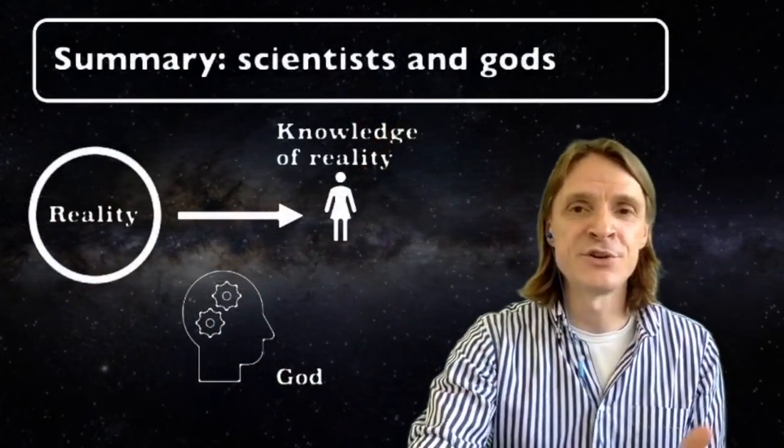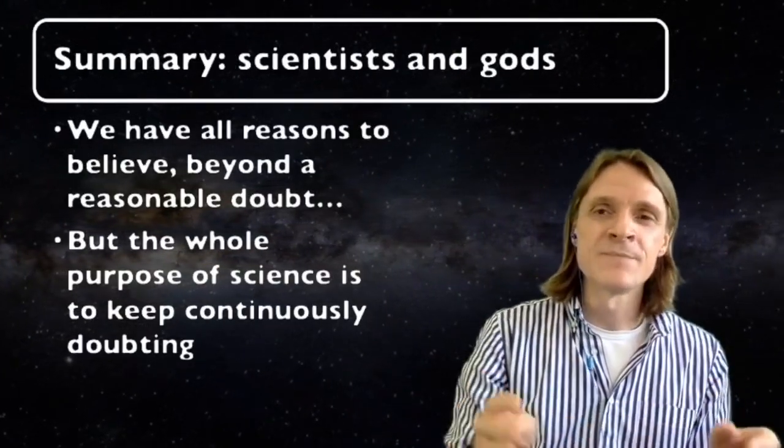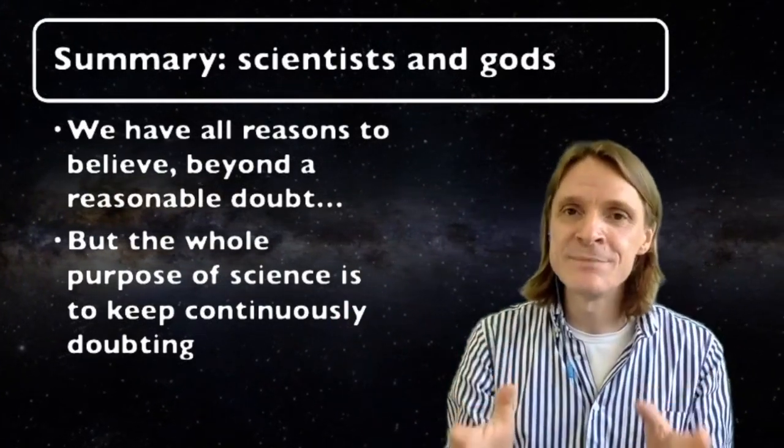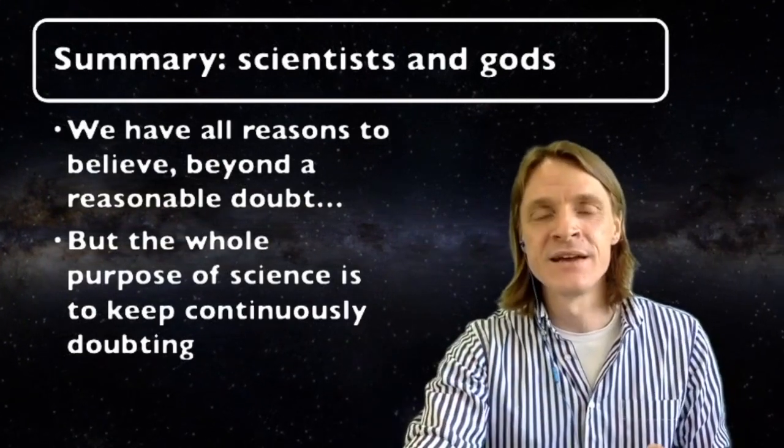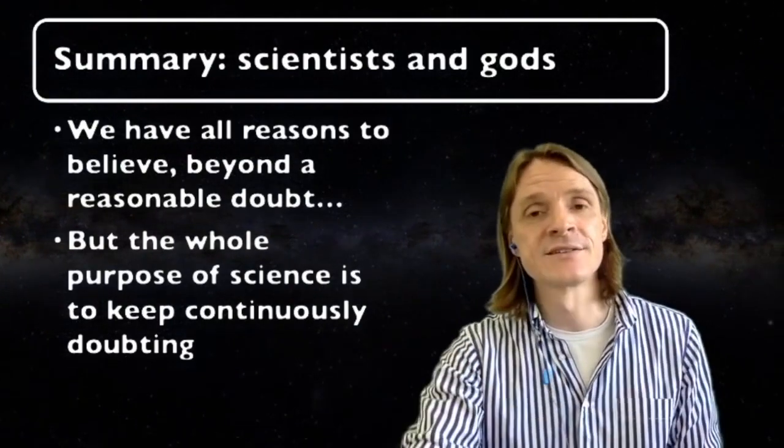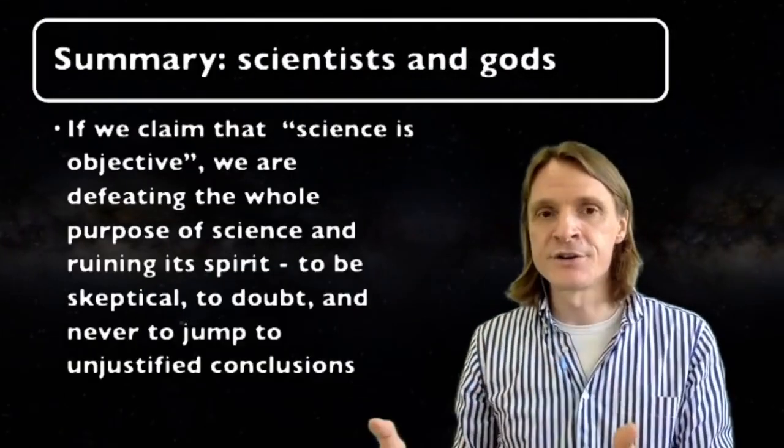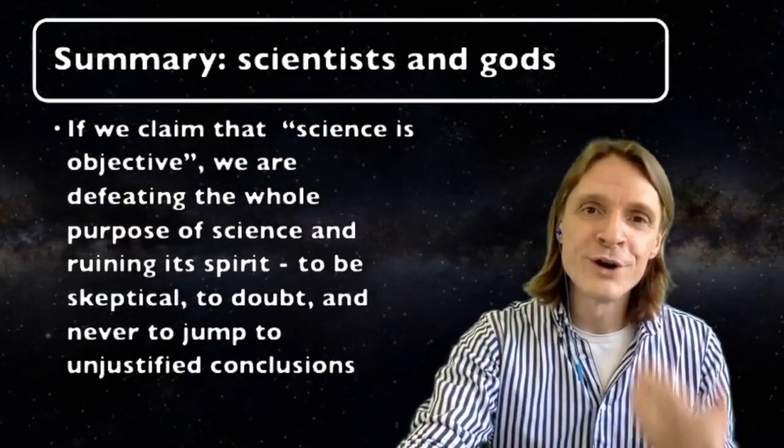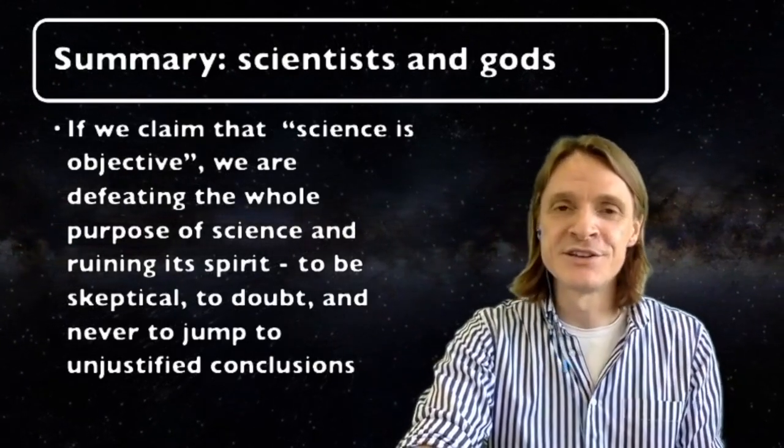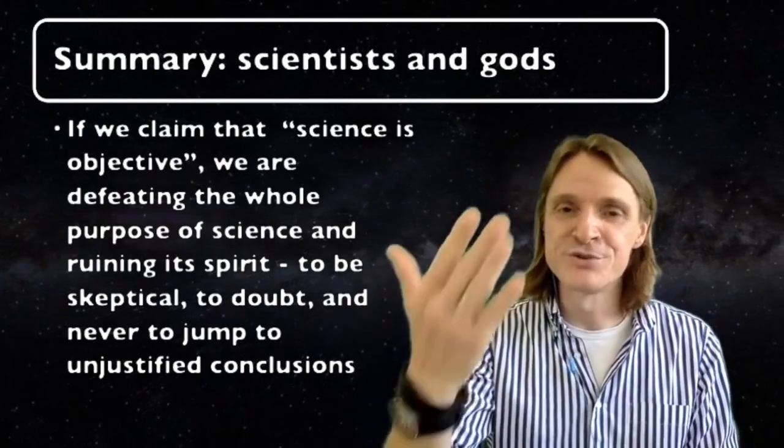History of science has been a history of disillusionment. We rigorously tested our incorrect intuitive beliefs and abandoned them, replacing them with the scientific picture of the world. But even so, science is still a product of our heads. It is a mental picture that we constructed about the world. It is not the real world itself. We have all reasons to believe beyond a reasonable doubt there is a direct correspondence between this mental picture and the real world. But the whole purpose of science is to keep continuously doubting and testing this belief. Theories turn out incorrect, even if they seem to be based on facts. It's a normal process. If we claim something categorical, such as science is objective, we're defeating the whole purpose of science and we're ruining its spirit to be skeptical, to doubt, to never jump to unjustified conclusions.